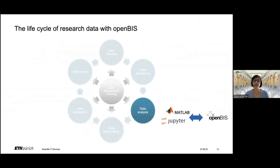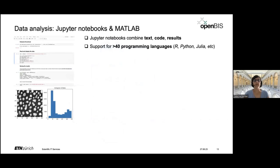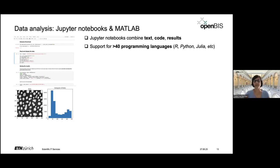For the data analysis part, openBIS itself doesn't provide analysis tools, but it provides connections to tools commonly used in science — Jupyter Notebooks and MATLAB. Jupyter Notebooks are documents that combine text, code, and the results of your code, all in one single document. They are very powerful and support more than 40 languages, among which R and Python are the most commonly used in our experience.